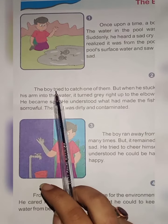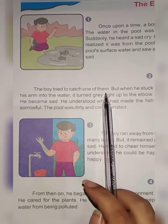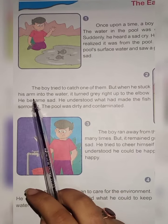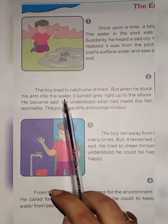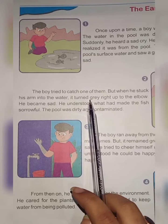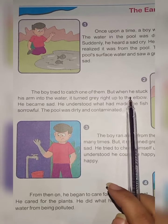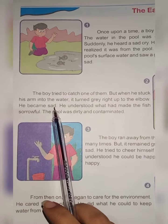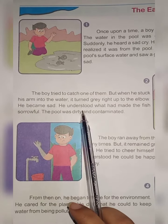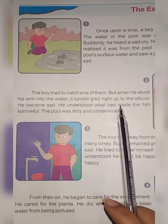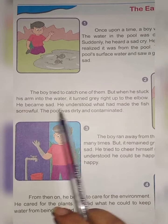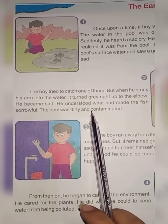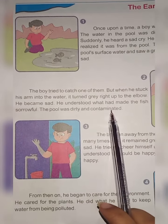The boy swept aside the pool's surface water and saw a group of gray fish, weak and sad. The boy tried to catch one of them, but when he stuck his arm into the water, it turned gray right up to the elbow. He understood what had made the fish sorrowful — the pool was dirty and contaminated.